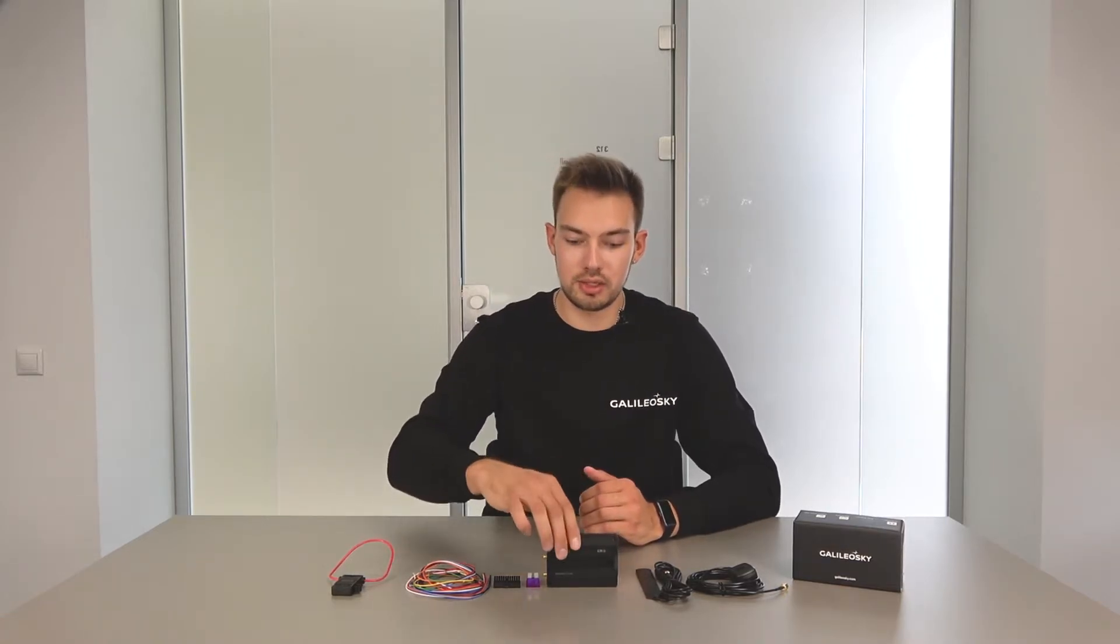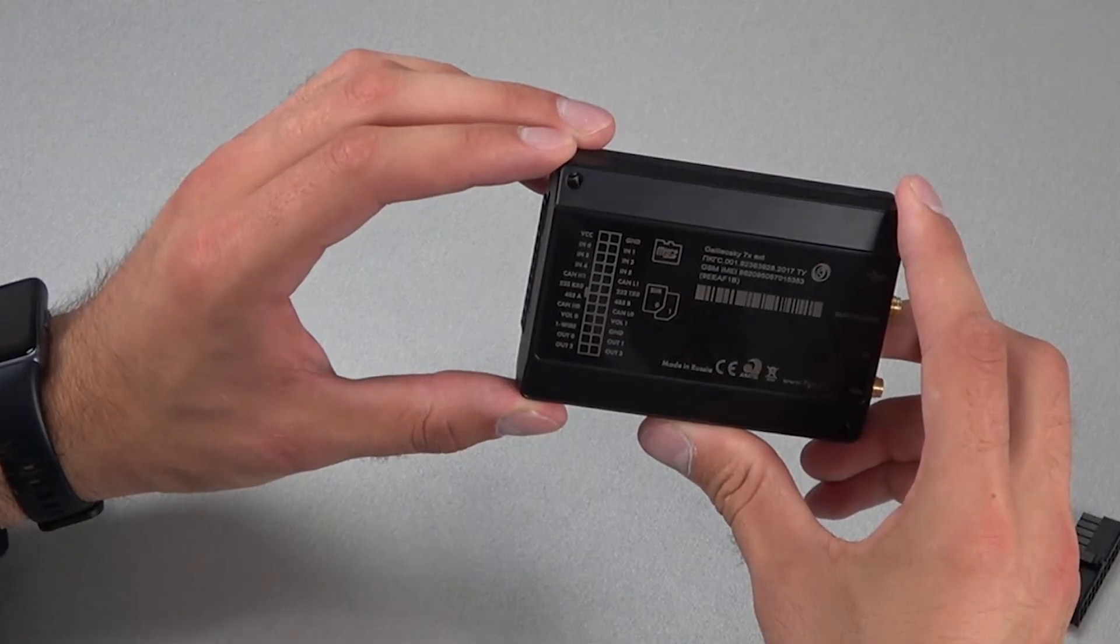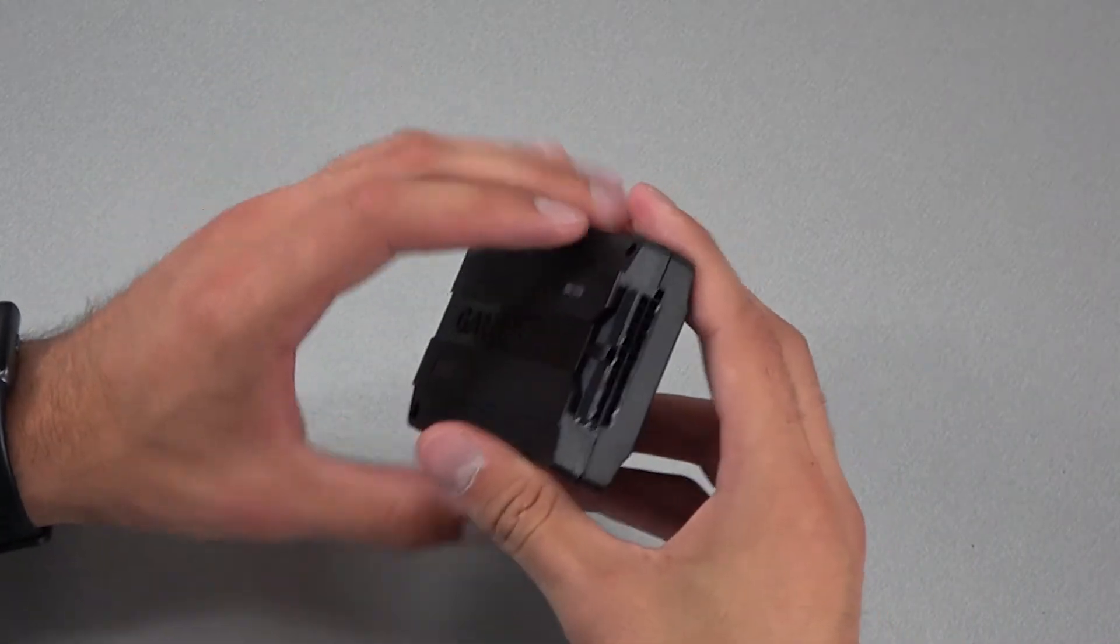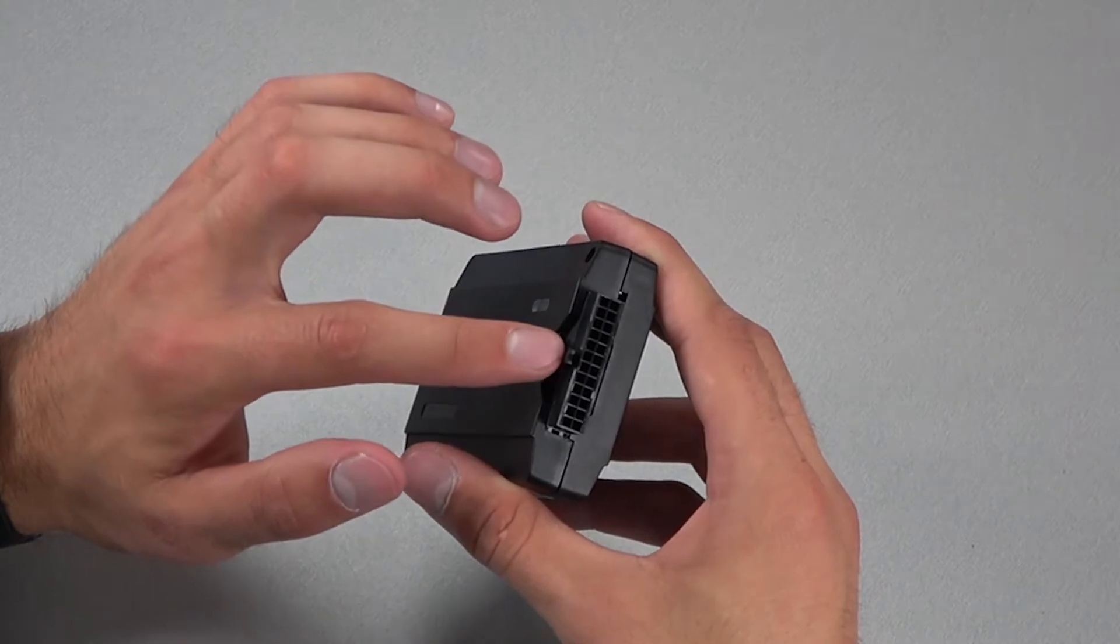To find out the purpose of each contact, look at the printed marking. It is located on the back side of the device. Here it is. Pay attention that the contact circuit is shown as it would look already installed in the device. The molding on one side matches the latch.